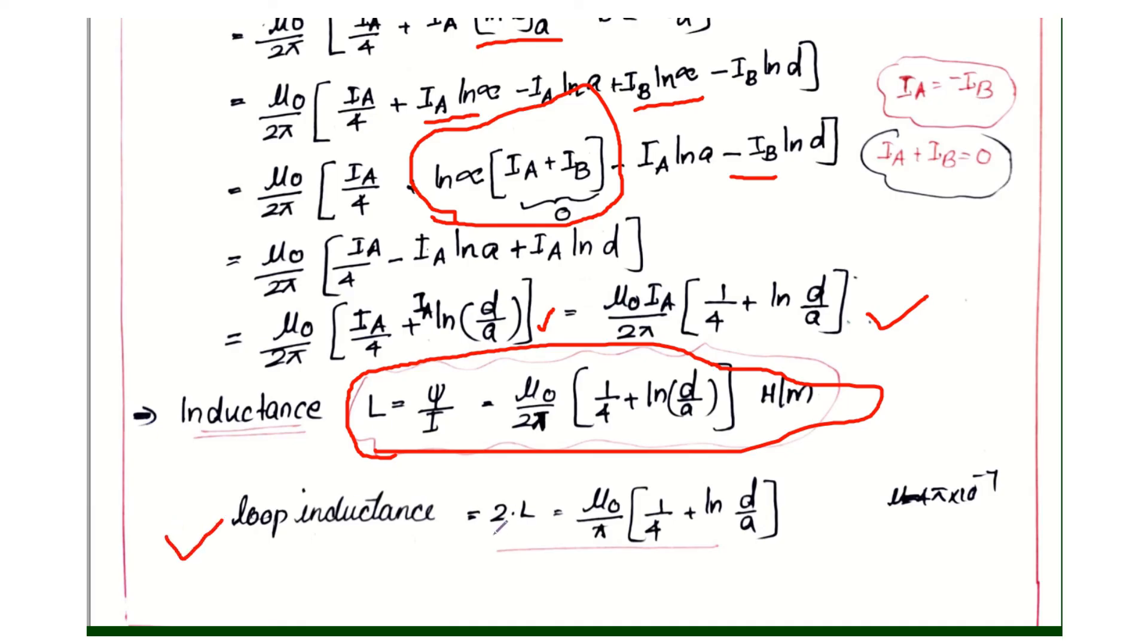Loop inductance is 2 times self inductance, that is 2L. Where μ₀ is equal to permeability of free space, its value is 4π into 10 raised to minus 7. Thank you.